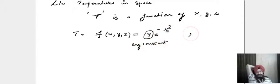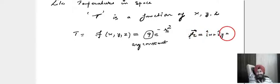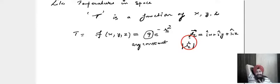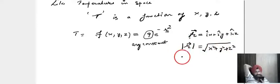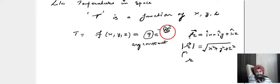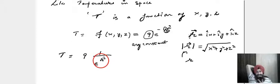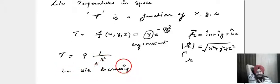Let the temperature be defined as T = 9e^(−R²), meaning the temperature changes exponentially as we move away from the heat source — T falls down, decreasing exponentially. The vector R is given by i-cap X + j-cap Y + k-cap Z.